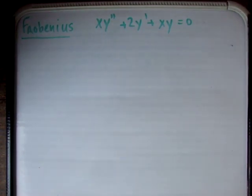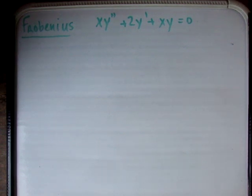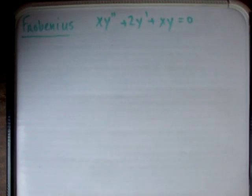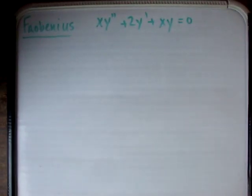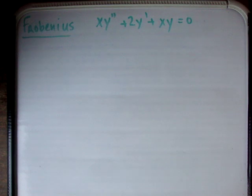In this video, I'm going to do one more example using the method of Frobenius to solve differential equations. This is going to be a slightly more difficult example, and I'm actually going to use a lot more shifting of indices, just to show you that it can be done any way you like.